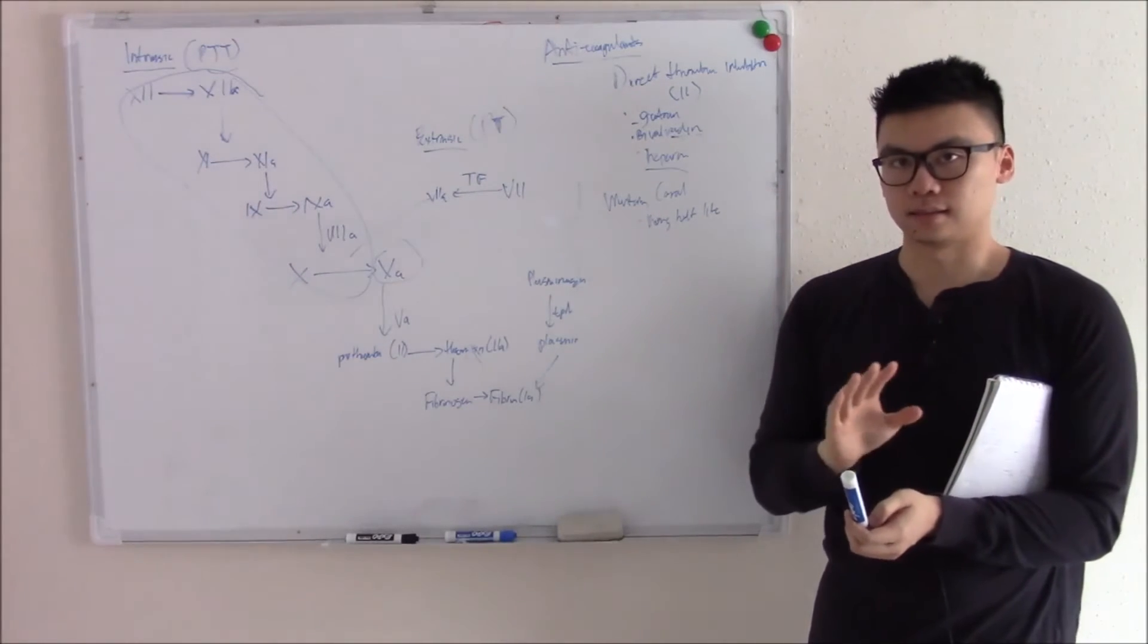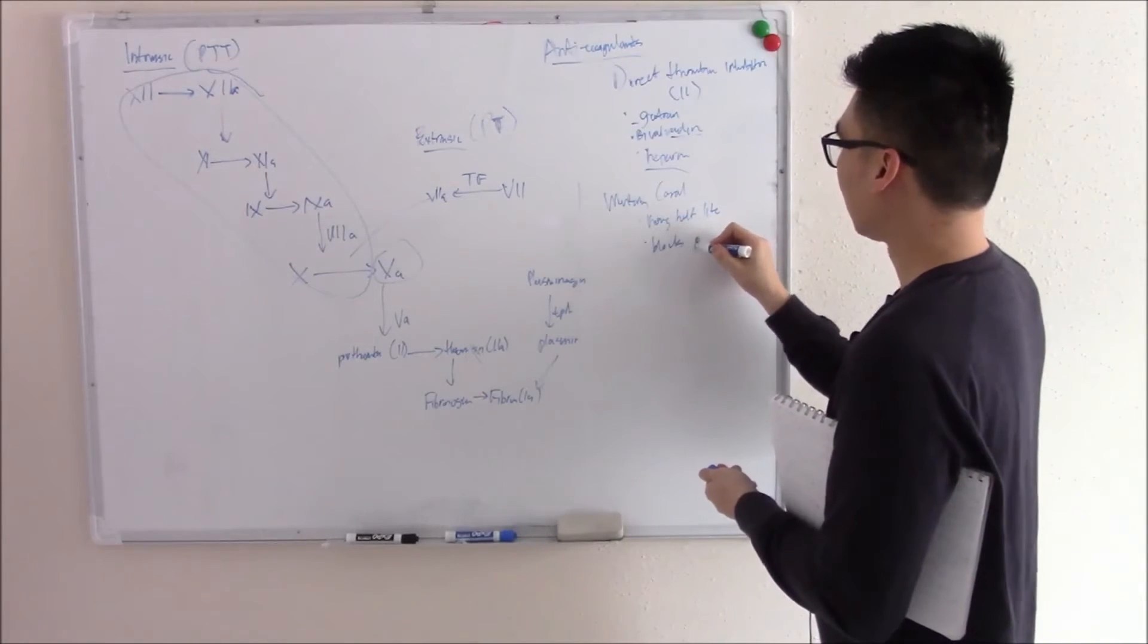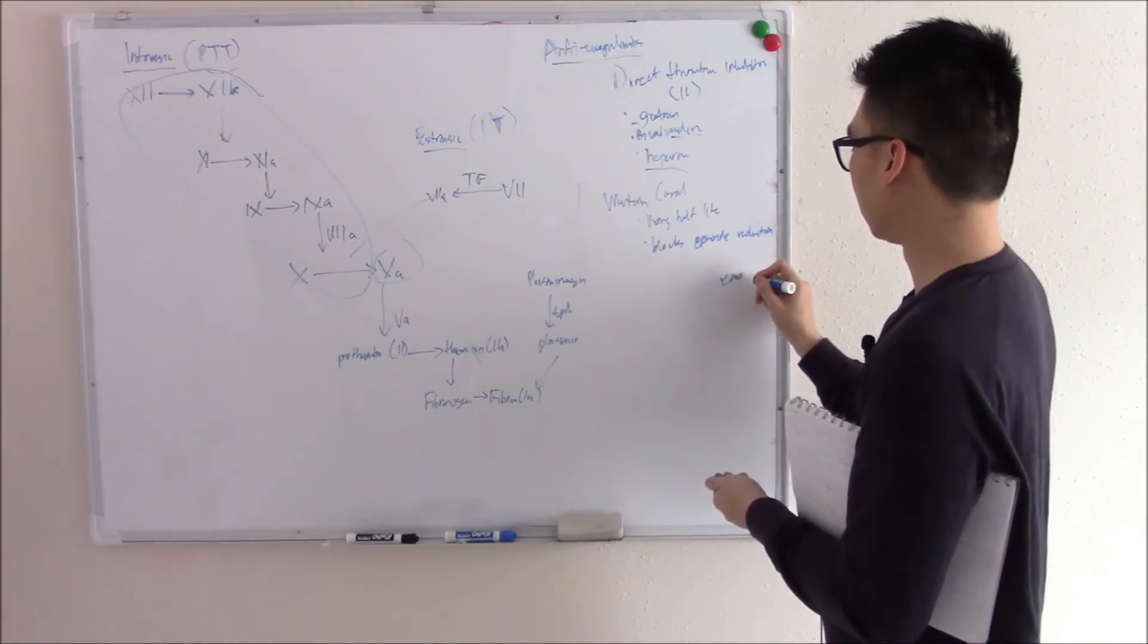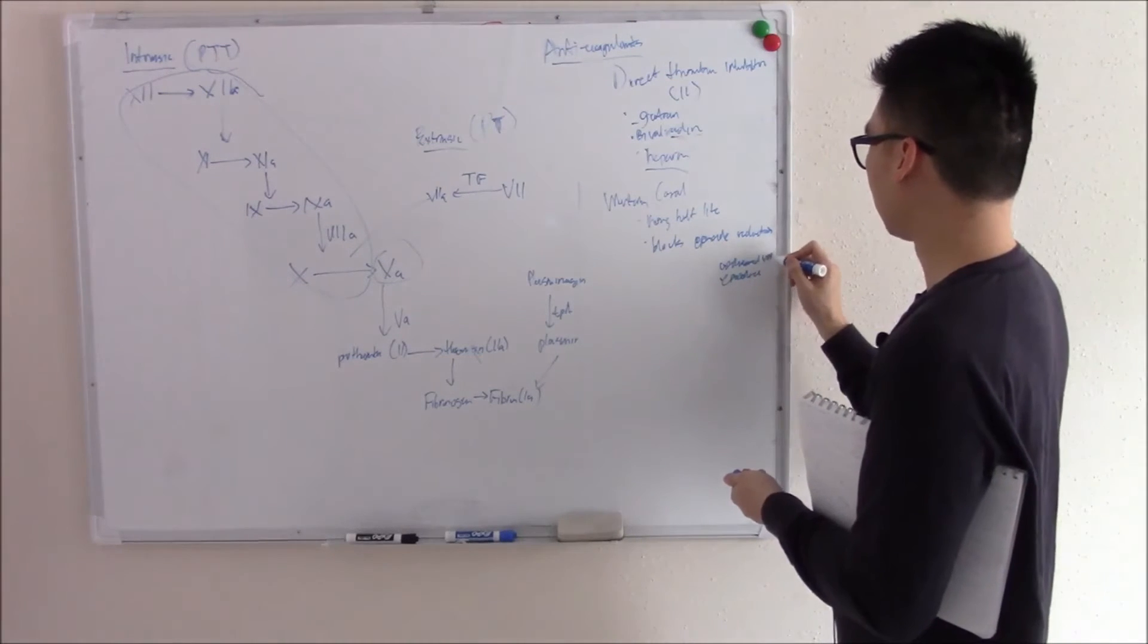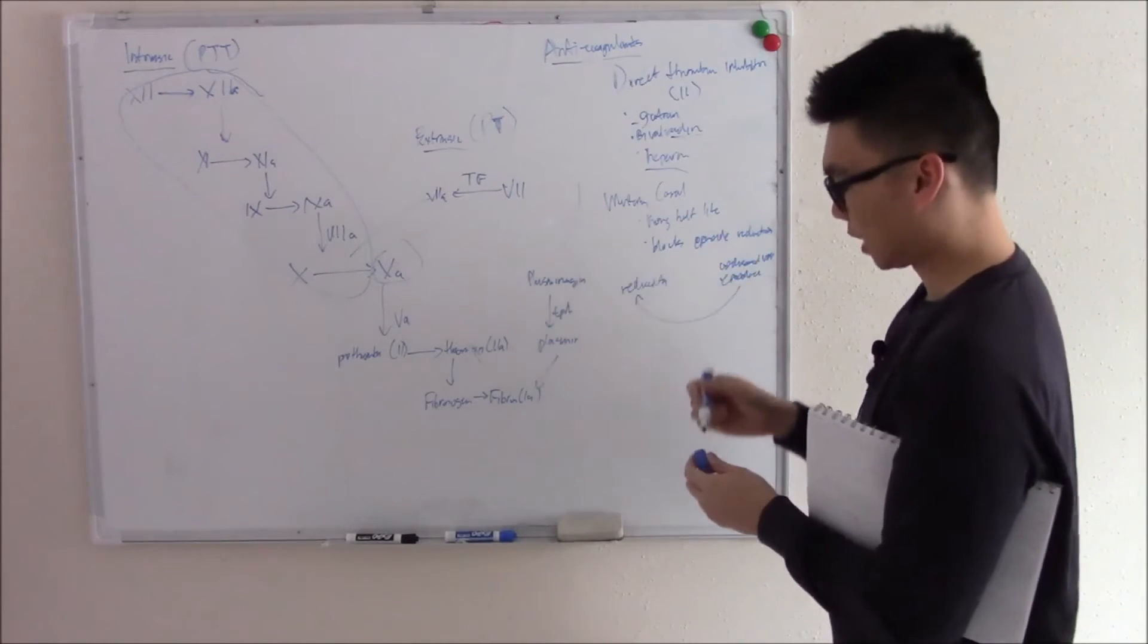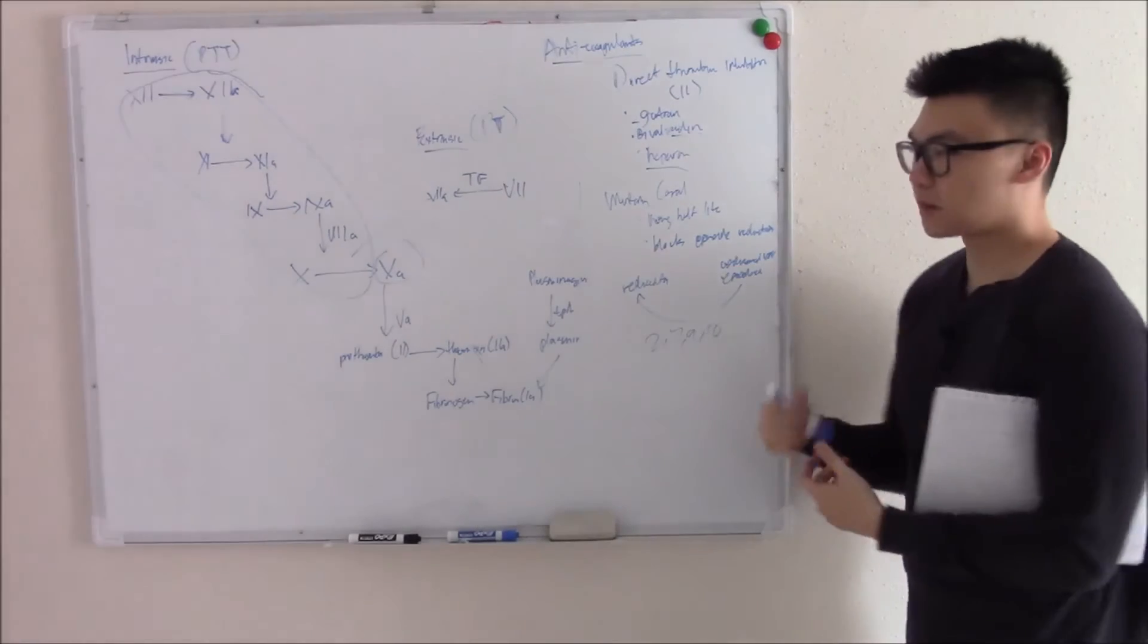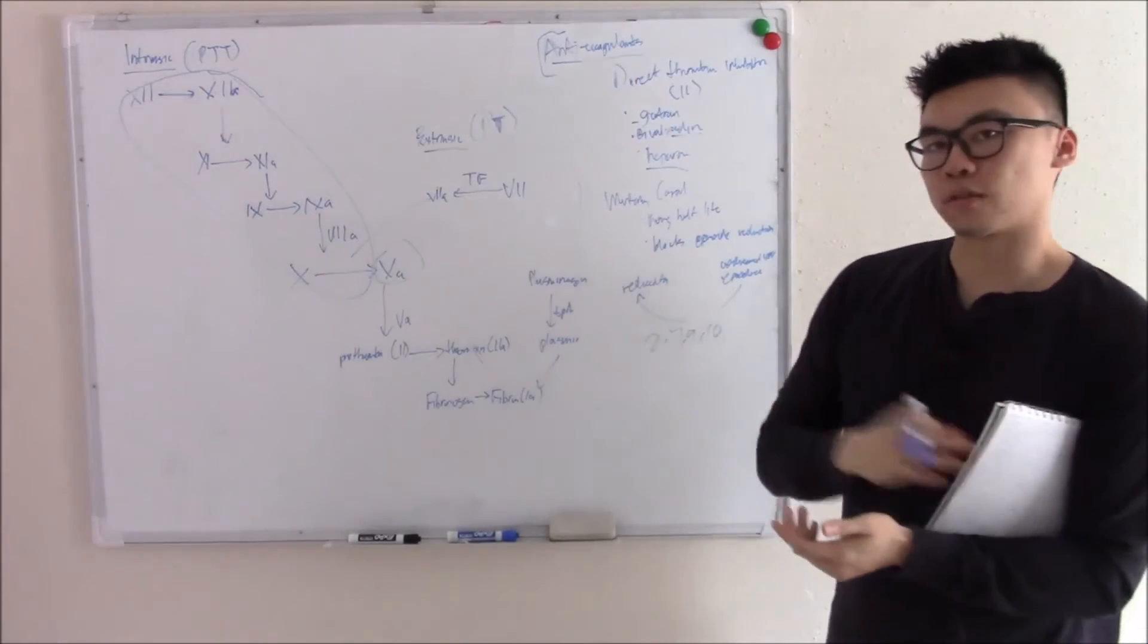Warfarin blocks epoxide reductase. What does that do? We just talked about it. Epoxide reductase turns epoxide, aka oxidized vitamin K, back to the reduced form right? It recycles it and that way the recycled vitamin K can go and activate more factors. Namely factor 2, 7, 9, 10. Then without those factors then you can't make a clot and that's why it's an anticoagulant. That's how warfarin works.